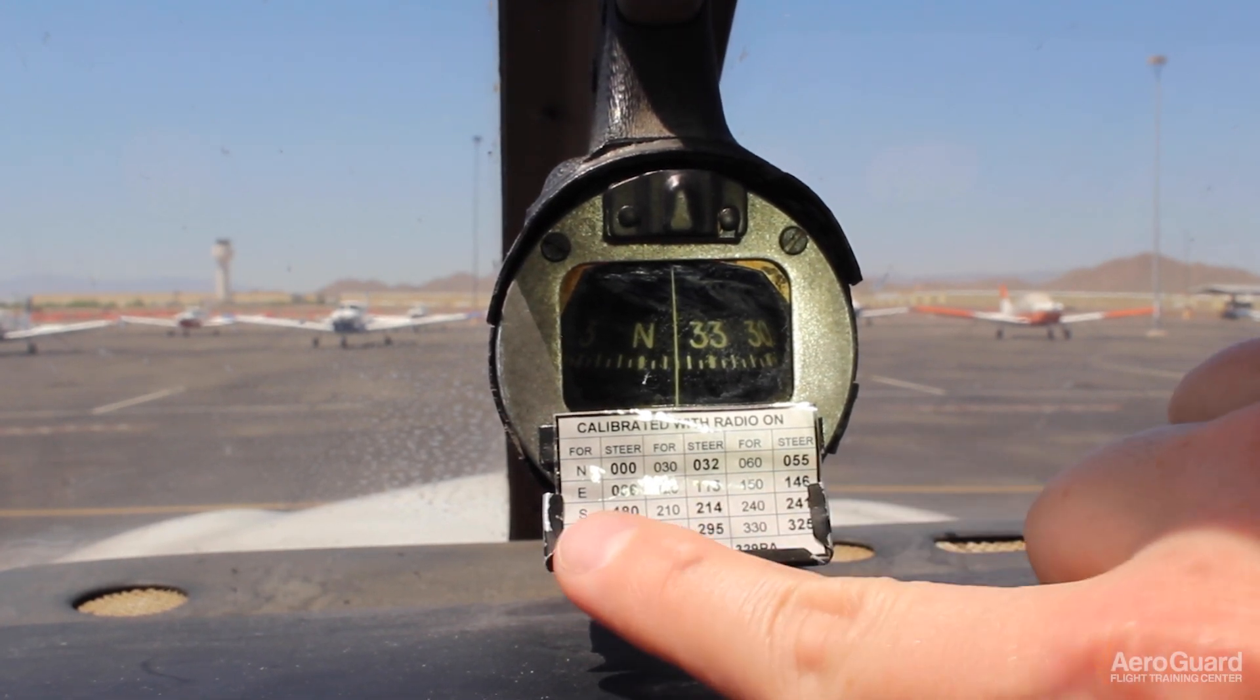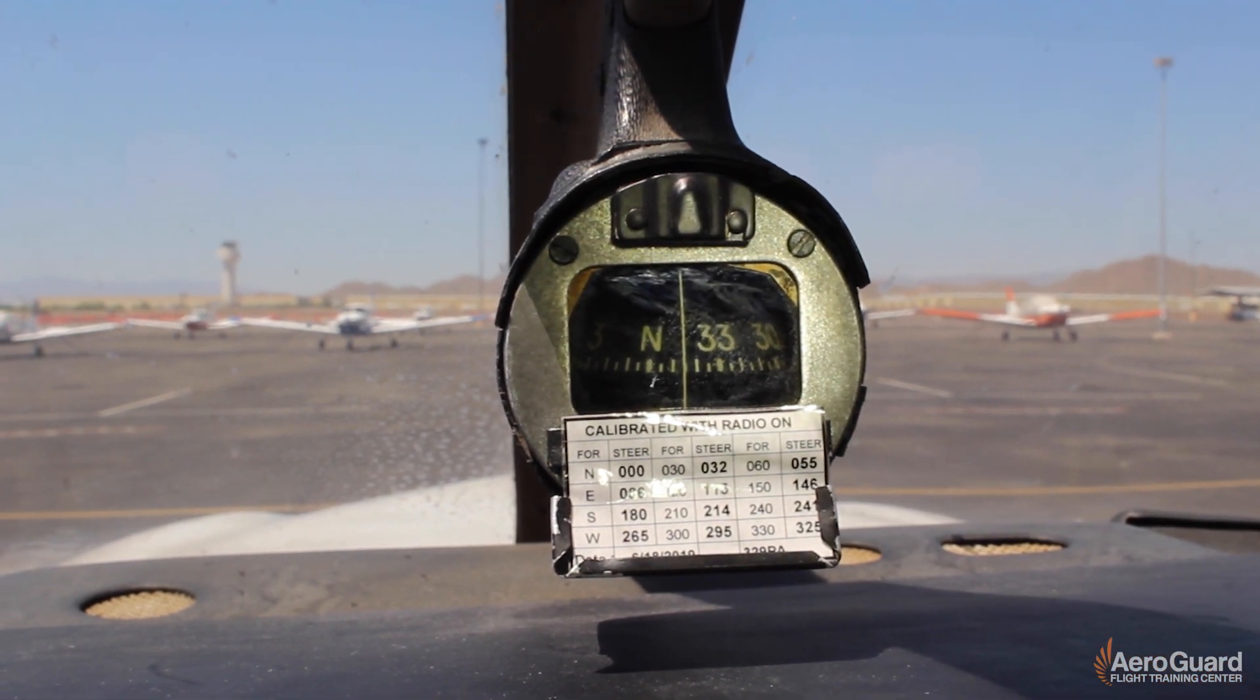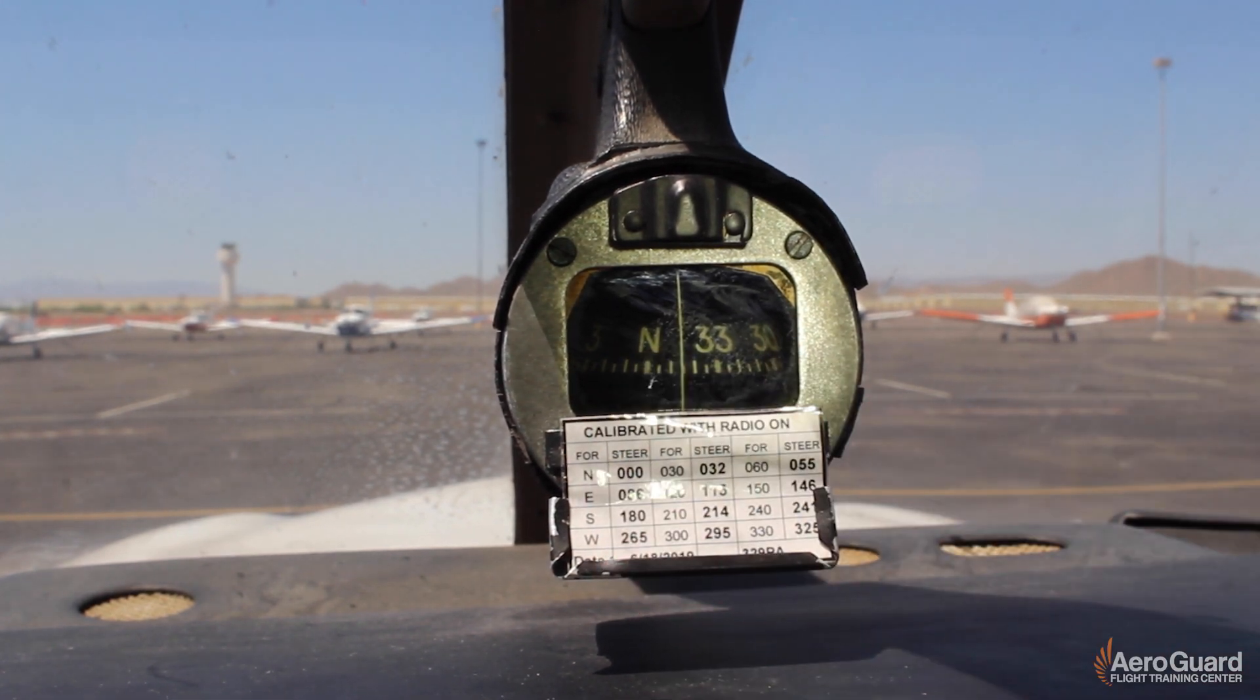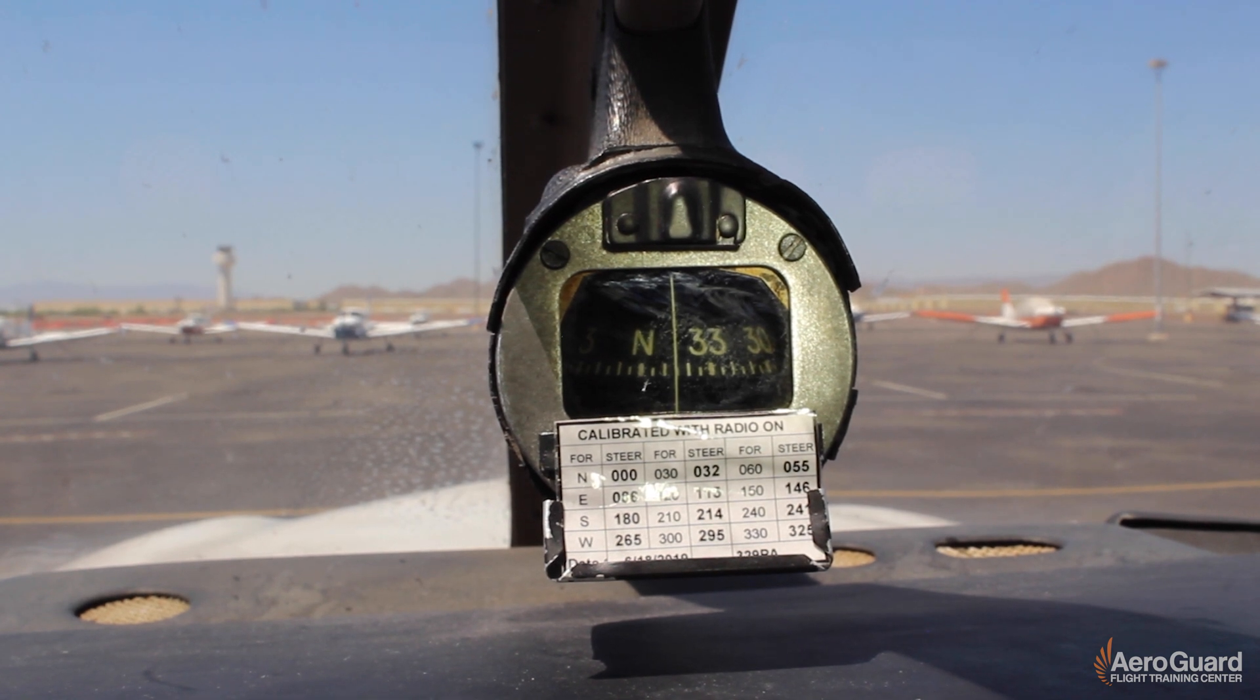However, if we looked at a heading of east, so if we wanted to fly a magnetic heading of east, we would actually make the compass say 0-8-6. So there's four degrees of deviation in that case.